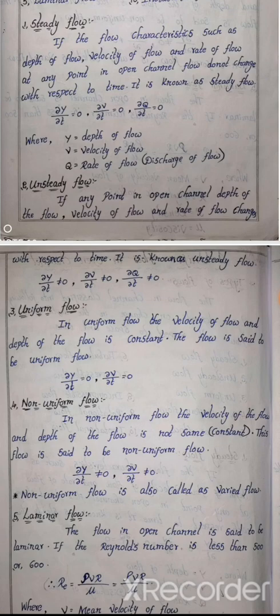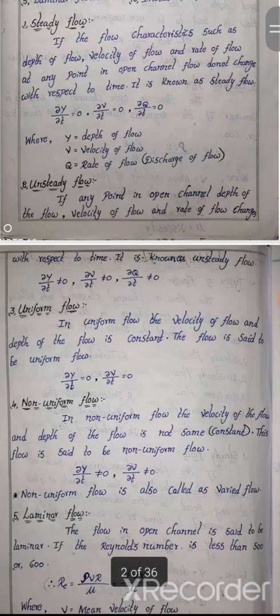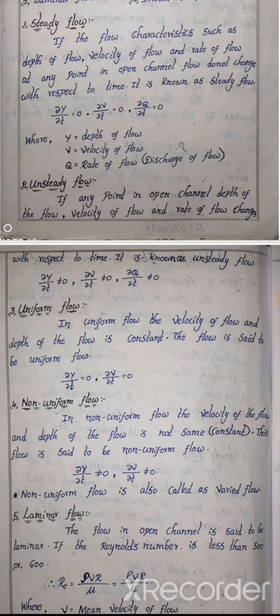What is unsteady flow? Unsteady flow is the reverse of steady flow. If at any point in an open channel the depth of flow, velocity of flow, and rate of flow change with respect to time, it is known as unsteady flow. Steady flow: characteristics do not change with time. Unsteady flow: characteristics change with time.